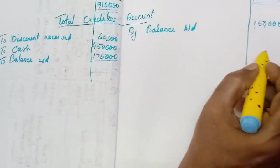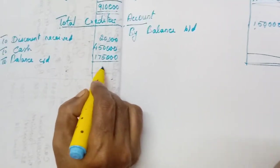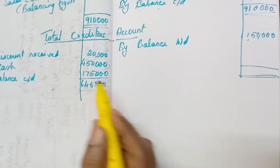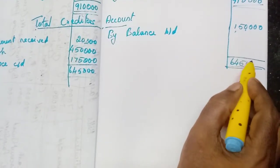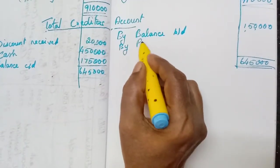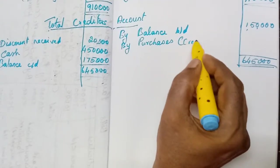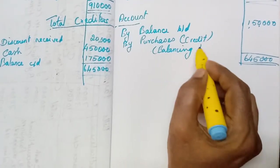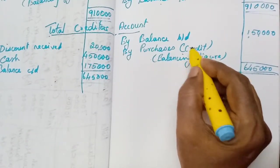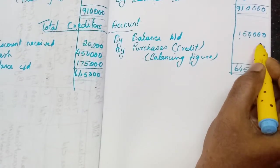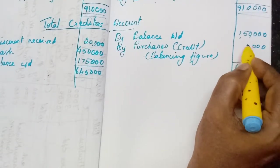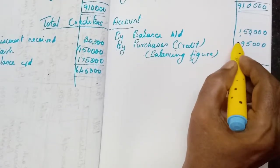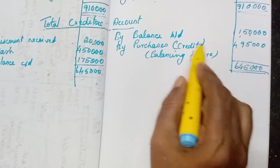Total the account — the debit side is more. Adding up gives 6,45,000. Write the same amount on the credit side: 6,45,000. The balancing figure on the credit side will be purchases — credit purchases. Calculating: 4,95,000 is the credit purchases.